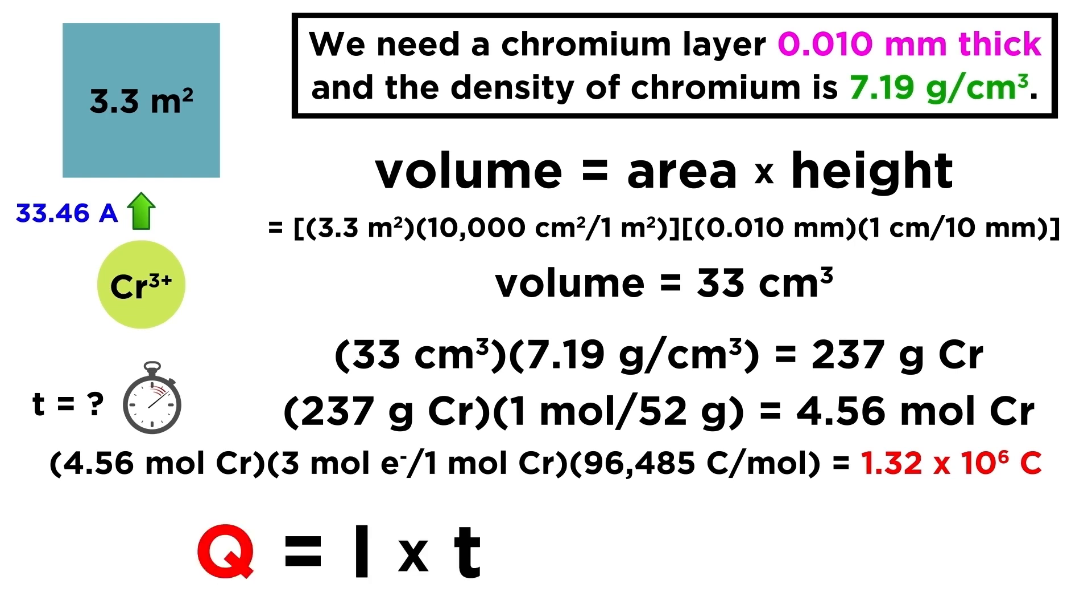Now that we know the charge in coulombs, we can take this equation relating charge, current, and time, plug in the charge we solved for and the current given, and we can solve for t. That will give us around 11 hours that the current will have to run in order to generate the desired layer of chromium.